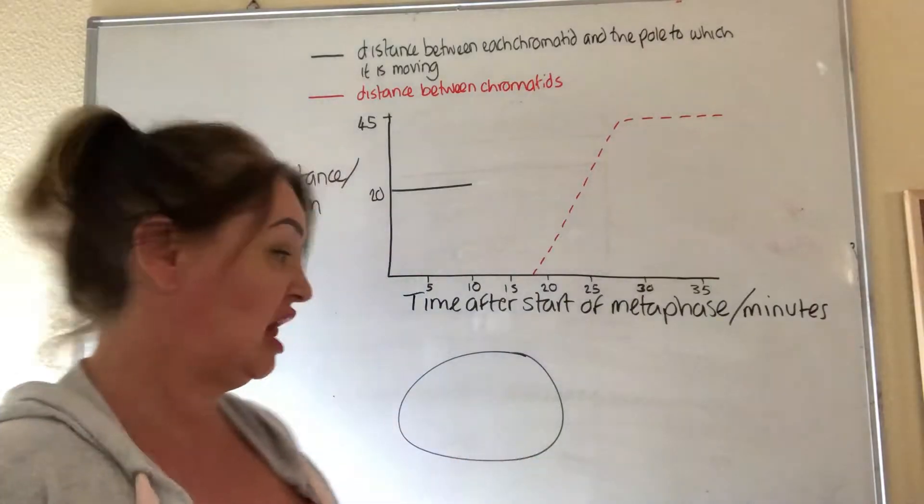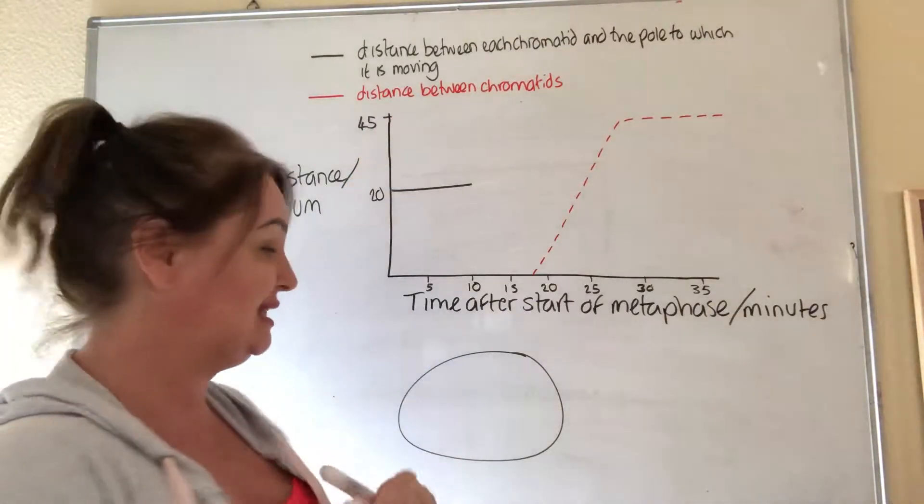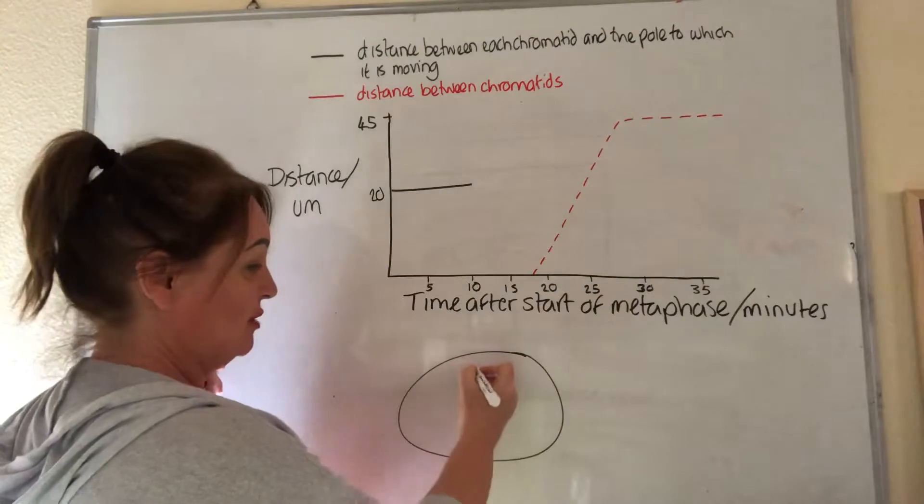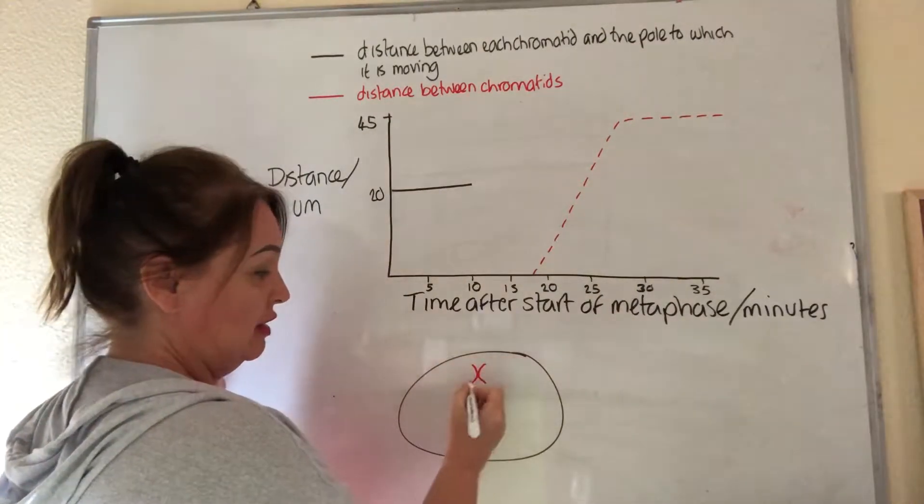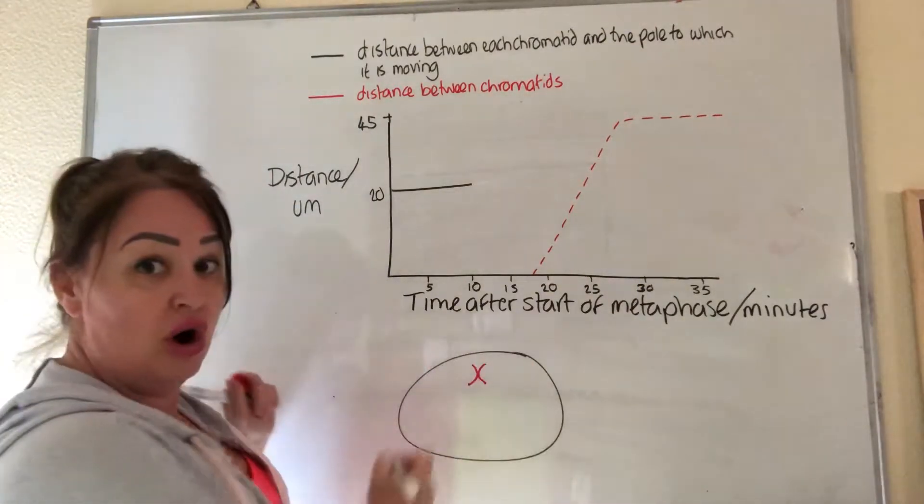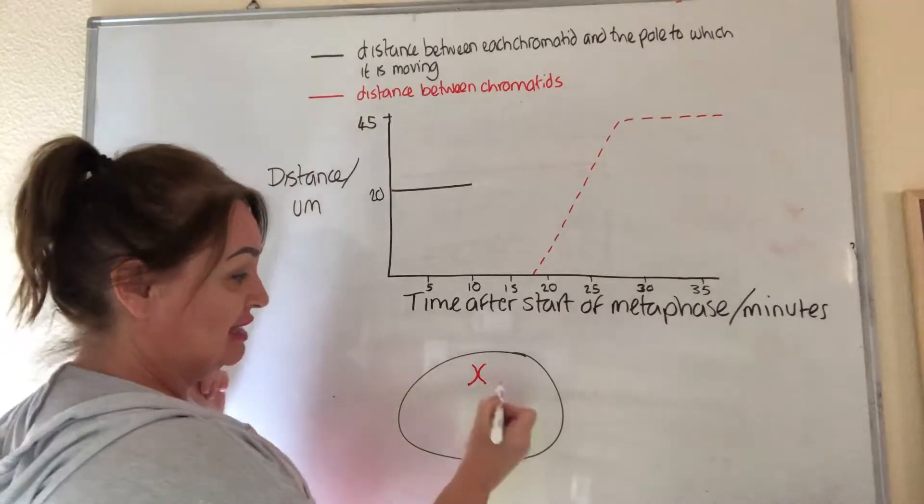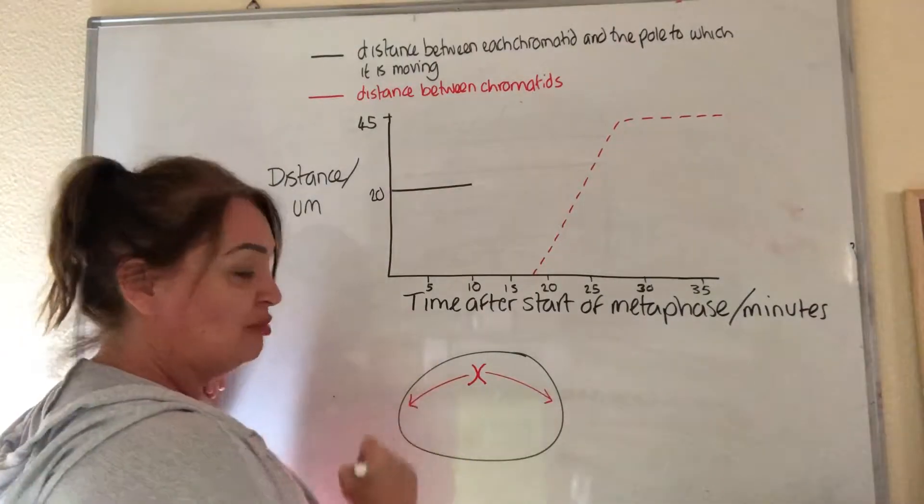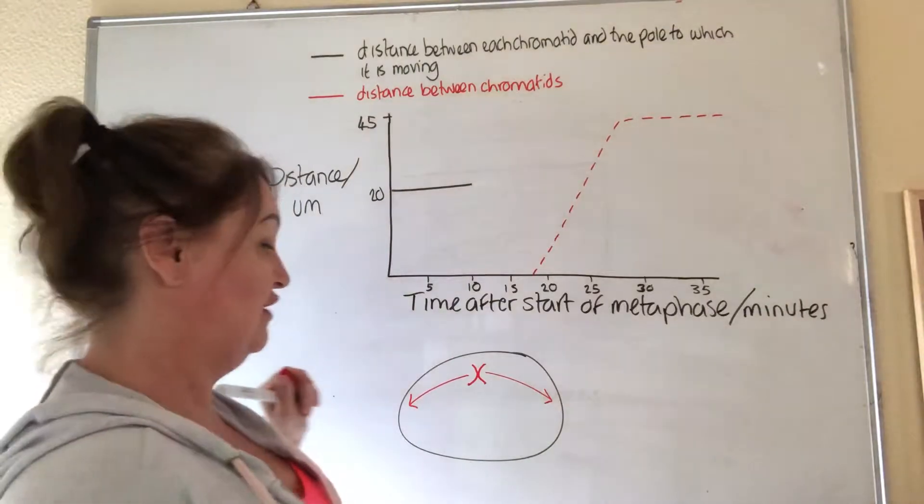Let's just remind ourselves that when we're talking about chromatids, we are talking about either half of this one chromosome and that they are going to be moving to opposite poles of the cell.